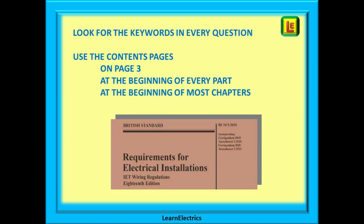Trying to remember 600 pages of the regulations is impossible for most of us. Instead, home in on the answer by looking for the key words in every question. Then use the contents pages in the book to narrow your search. My go-to page is always page 3, the main contents page. This will then direct me to the contents pages at the beginning of each part, and many chapters also have their own contents pages too.